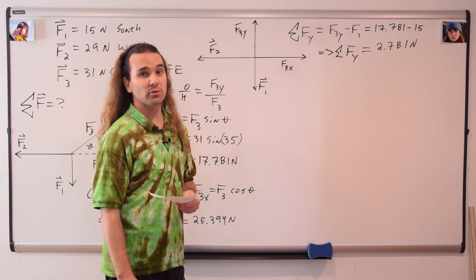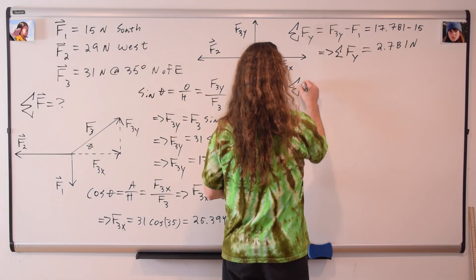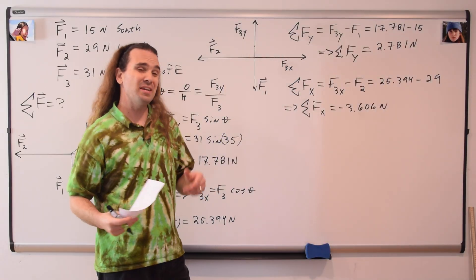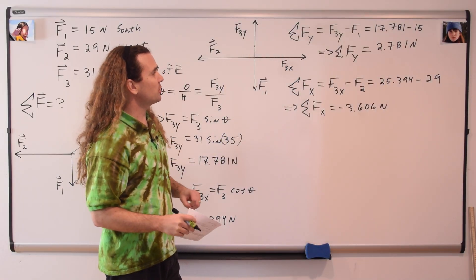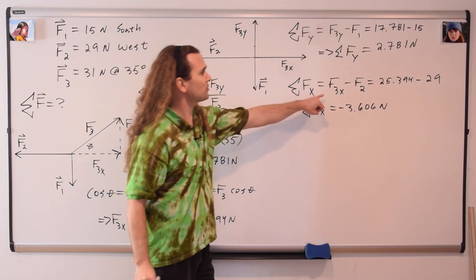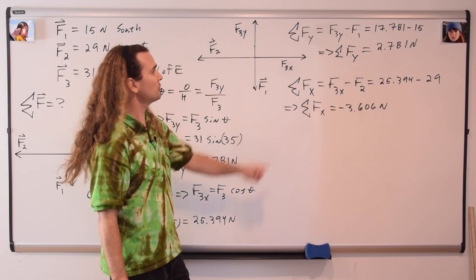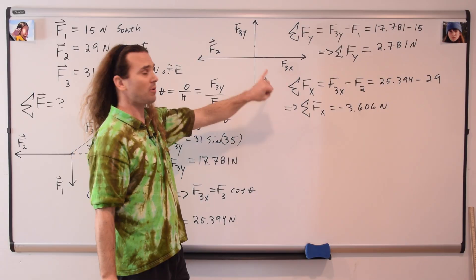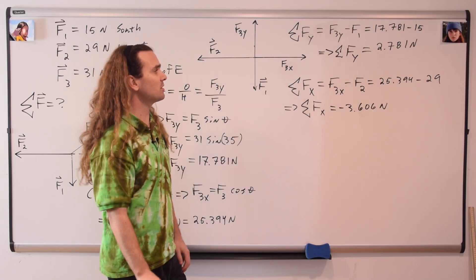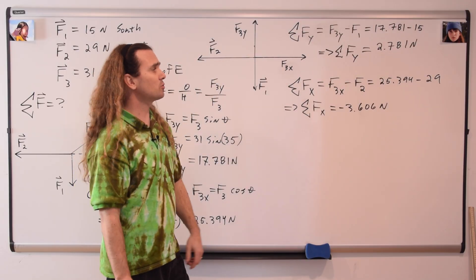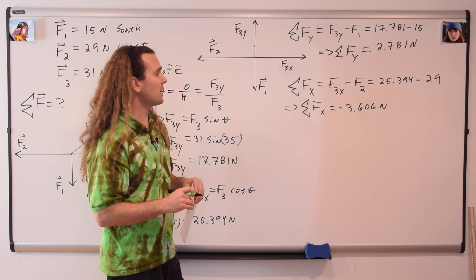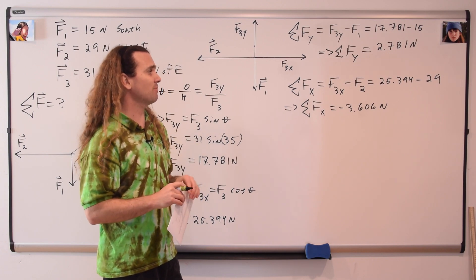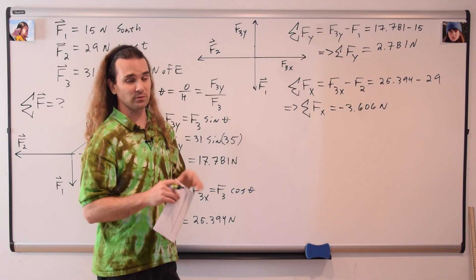Now we can sum the forces in the x direction. The net force in the x direction is equal to force three in the x direction minus force two. Force three in the x direction is positive because it's to the right; force two is negative because it's to the left. So 25.394 minus 29 gives us a net force in the x direction of negative 3.606 newtons.